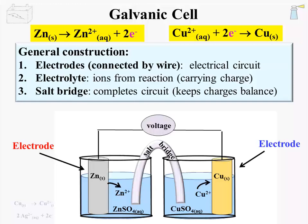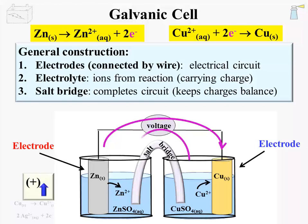A salt bridge works something like this. If negatively charged electrons are being moved from the zinc electrode to the copper electrode, then the zinc half-cell will have lost negative charge, resulting in a more positively charged half-cell. To prevent the buildup of positive charge, the salt bridge allows negatively charged anions to flow into the zinc half-cell. It also allows the flow of positively charged cations out of the half-cell, which also helps to alleviate the buildup of positive charge.